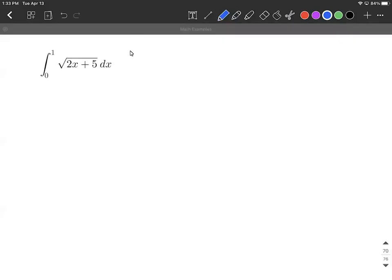All right, let's evaluate this definite integral where we have the square root of two x plus five evaluated between zero and one for our bounds of integration.